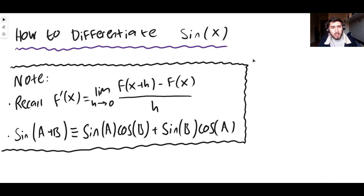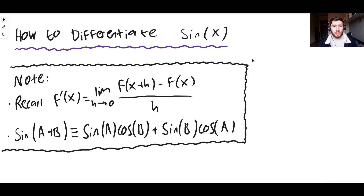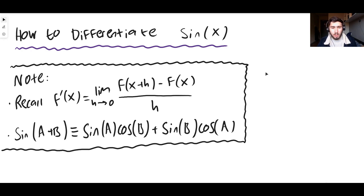The derivative of sine x is cos x. So if that's all you wanted to know, there you go, you're finished. The derivative of sine x is going to be cos x. But allow us to prove it. Why is the derivative of sine x cos x? Why is that true? That's what we're doing here.